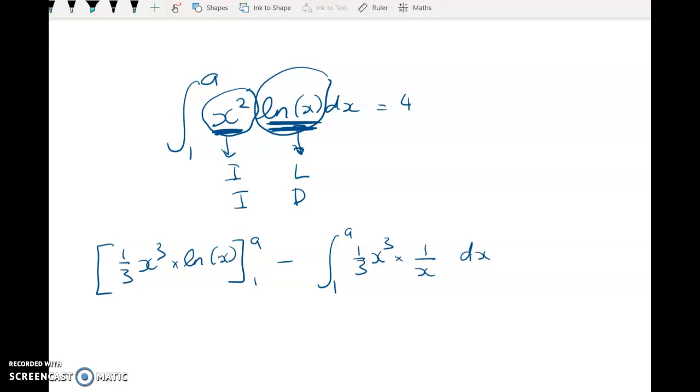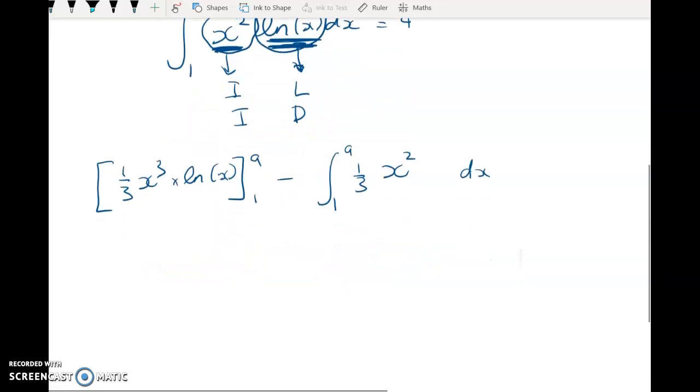Now be careful here, this was where a couple of you went wrong in class. You've got to remember to clean this up before you go and integrate. So x cubed over x is magically, with my magic eraser, going to become x squared. Right, so that all has to equal 4.